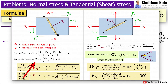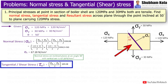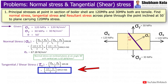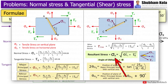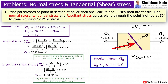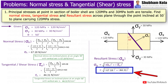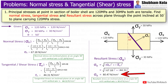Now let's find shear stress, that is tangential stress, on the inclined plane. Putting the values of sigma_x and sigma_y into the formula, tangential stress on the inclined plane is 44.31 N/m². To calculate resultant stress, we use the values of sigma_n and tau_theta in the formula and get resultant stress of 80.47 N/m², which is tensile.